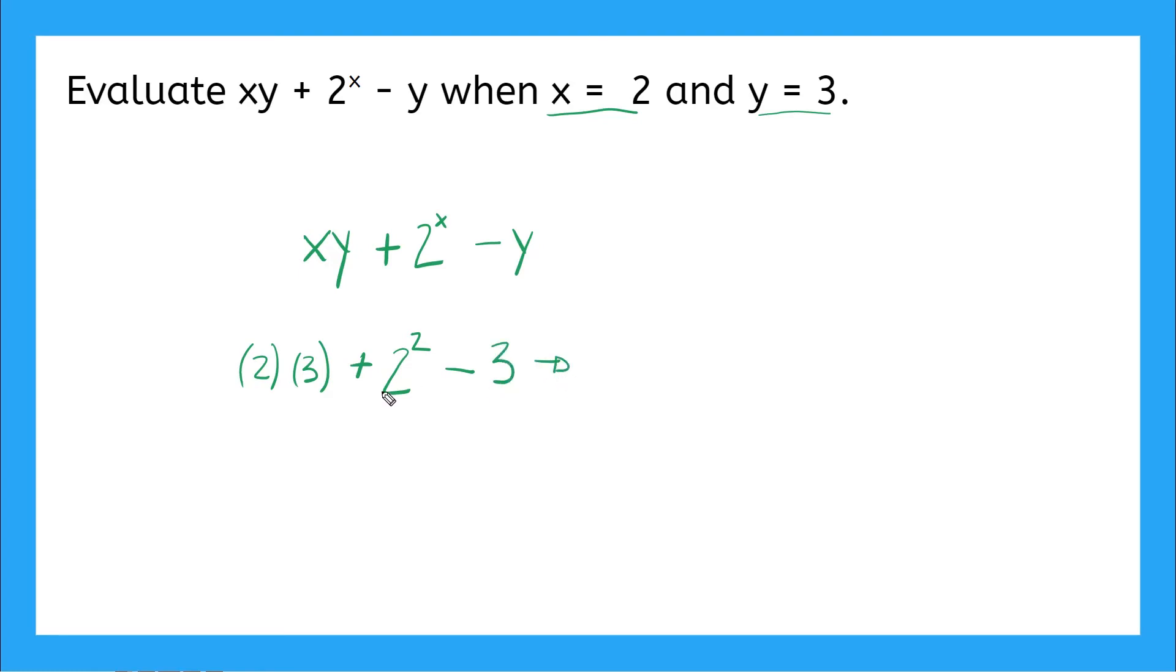So now I can start to evaluate this using order of operations, which means I start with my exponent. So I maintain 2 times 3. And then I'm adding, I can simplify here, 2 to the power of 2 is the same as 2 times 2. So that gives me 4 minus 3. Perfect.